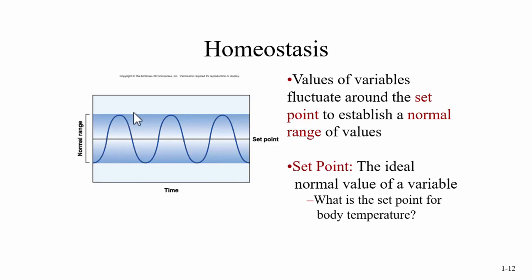Some ranges are going to have very wide normal ranges, and even if you go out of it a little bit, it's usually not a problem. These things can change depending on what's going on — like a blood sugar level. A normal fasting blood sugar level range is going to be different than after you've eaten something, and even different depending on what you've eaten. Blood pressure is the same — a normal blood pressure at rest is different than during exercise.